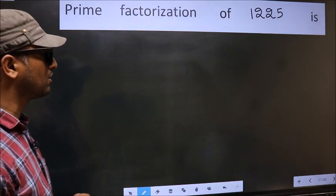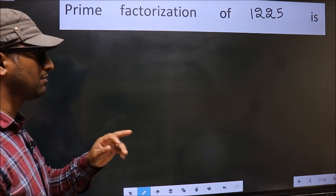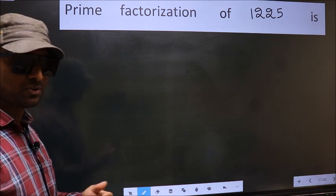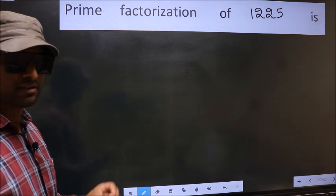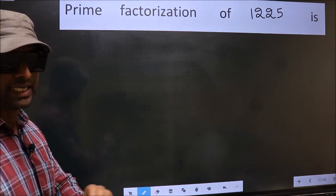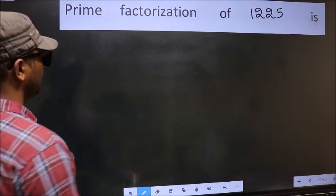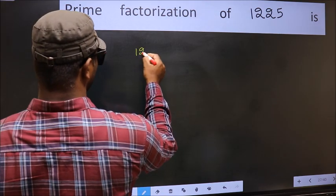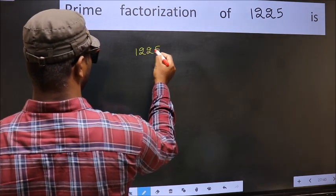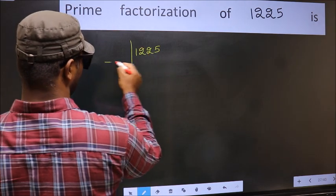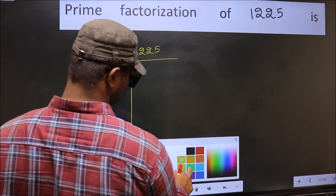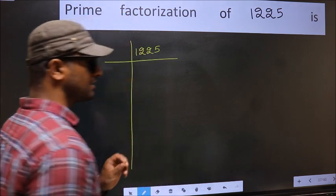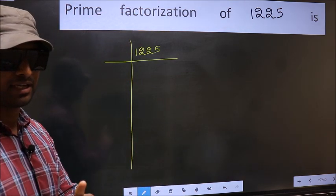To do the prime factorization of 1225, first we should frame it in this way. Write 1225. This is your step 1.